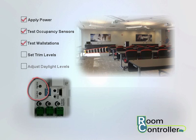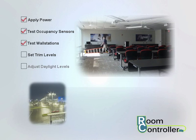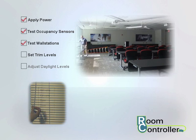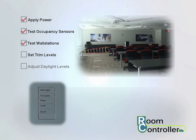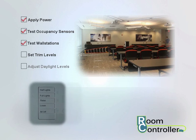Trim level adjustments are done using adjustment dials on board the room controller. For best results, adjust the trim settings at night or during the day using shading to darken the space. Using the wall stations, turn on all controlled lighting. For fluorescent lighting loads, wait 1 minute to allow lamps to warm up.